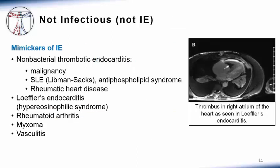There are several mimickers of infective endocarditis. These are clinical conditions in which patients present with signs and symptoms of infective endocarditis, such as fever, embolic events, thrombi on heart valves, etc., but do not have infective endocarditis. Examples include non-bacterial thrombotic endocarditis — most often these patients have malignancy, but this can also be seen with lupus, known as Libman-Sachs endocarditis, antiphospholipid syndrome, and rheumatic heart disease. Other mimickers include Loeffler's endocarditis, as can be seen in hyper-eosinophilic syndrome, rheumatoid arthritis, myxoma, which is a primary tumor of the heart, and vasculitis.